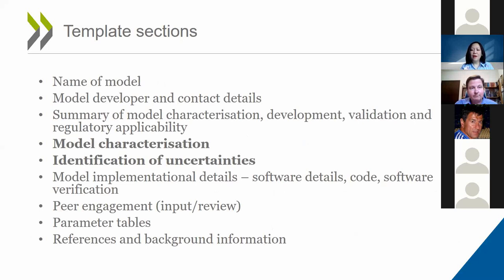Here is what we propose to include when reporting a PBK modeling analysis: we recommend starting with the name of the model and details about the modeler, an executive summary, then details about the model and key uncertainties, the implementation of the model and any peer review records, parameter tables, and references and background information. I will discuss in more detail the two highlighted sections: model characterization and uncertainty.